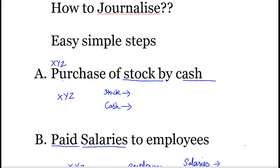Say there is a company named XYZ Limited and it has purchased stock by cash. The first step is to identify the two parties of the transaction. An important element here is the financial nature of the transaction — I haven't specified the amount. We only journalize transactions which are financial in nature, so let us say in this example stock was purchased by cash for 50,000 rupees. This signifies it is a transaction of financial nature.